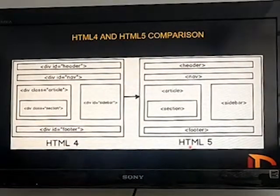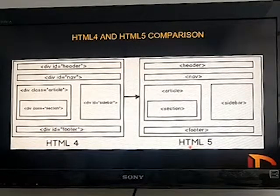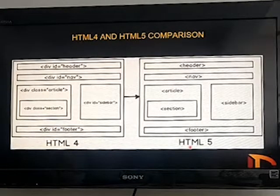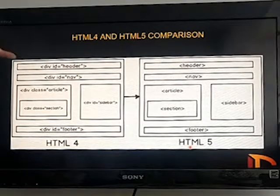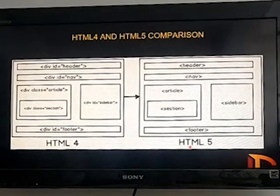If we compare the structure between HTML4 and HTML5: in HTML4, IDs and classes were used to define the structure, whereas in HTML5, direct elements are used. For example, in HTML4, the header would be given an ID of 'header', whereas in HTML5, a direct header tag is given.